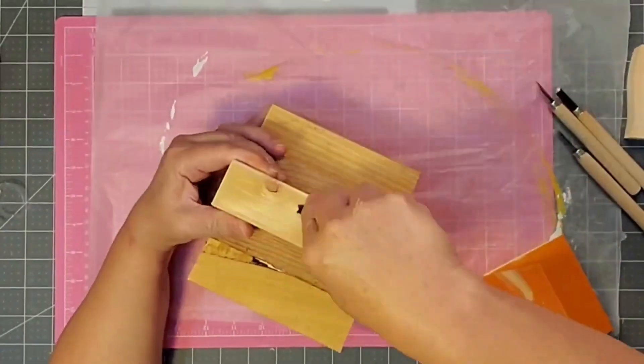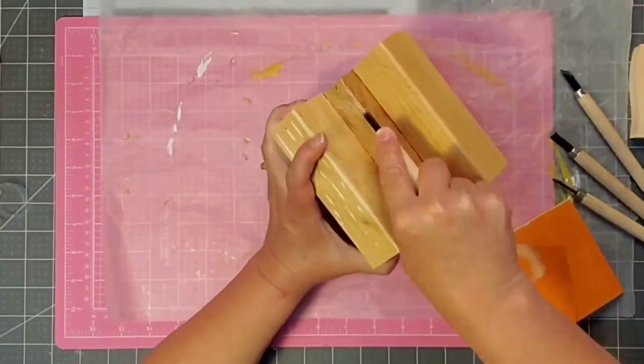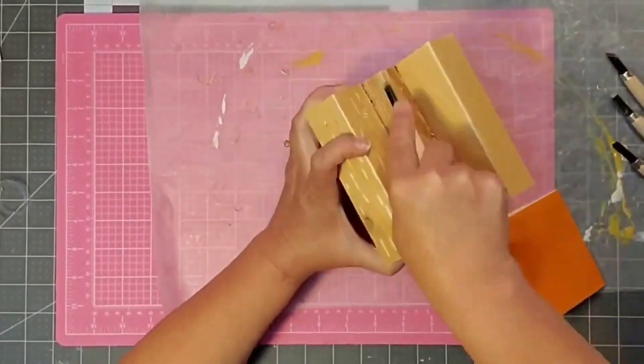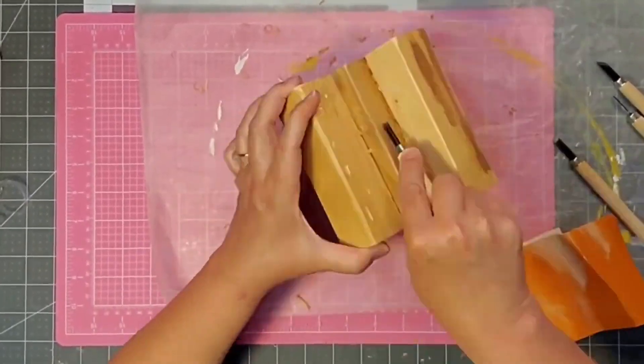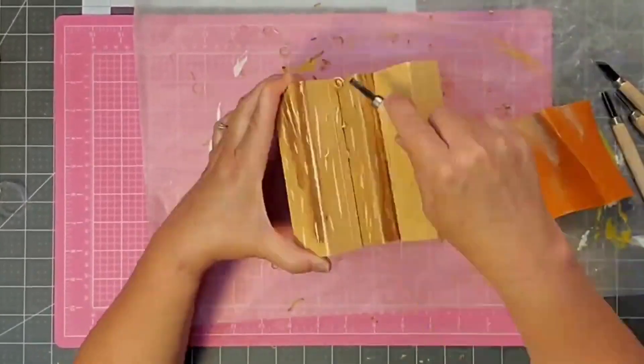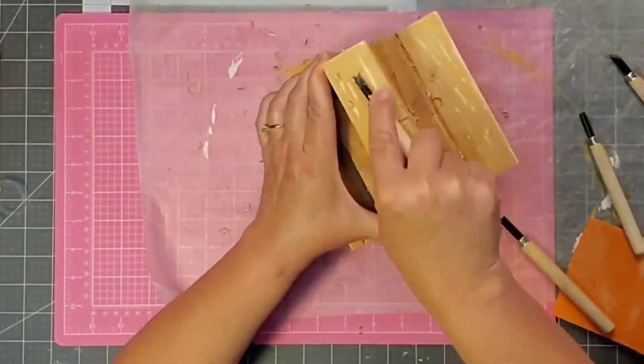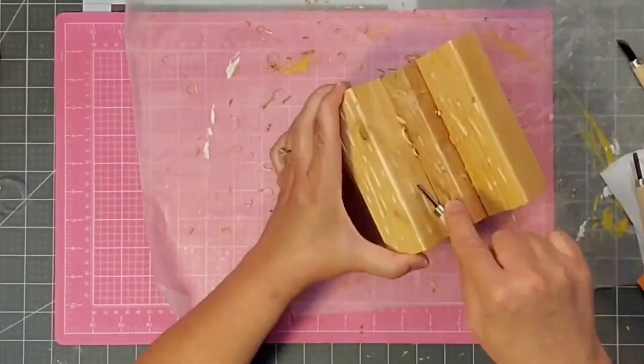I'm going to start distressing it. I'm going to use sandpaper and round off those edges, and then I'm using those woodworking tools from the Dollar Tree, and I'm just going to gouge out places all along the side, and just distressing. If you were doing a lot of these for a craft show, I would suggest using a Dremel.